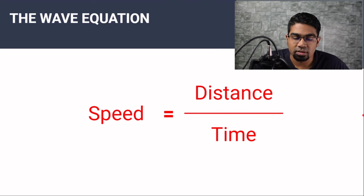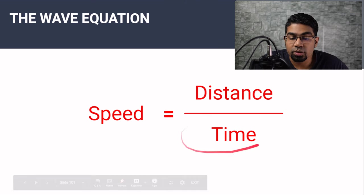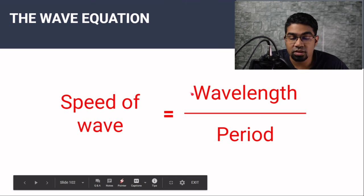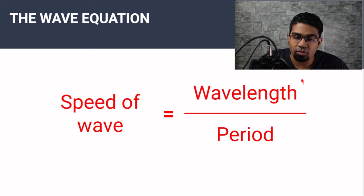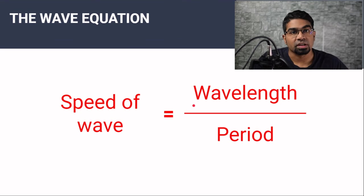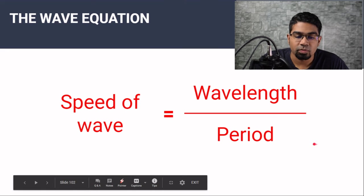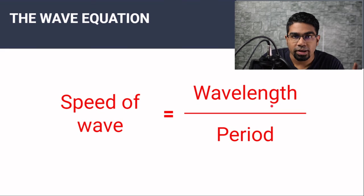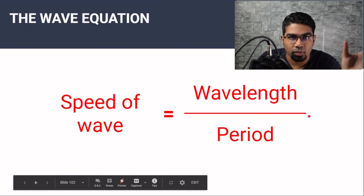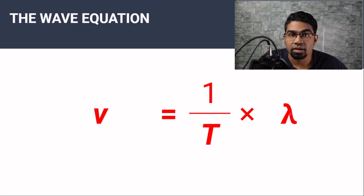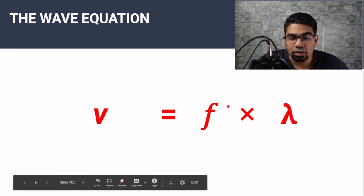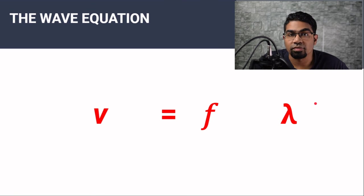The wave equation begins with the equation for speed. Speed is the rate of change of distance, or distance per unit time. To get the speed of the wave, we measure the distance traveled by the wave over the time taken. We choose the length of one wave — the wavelength — as the distance traveled, and the time taken for one complete oscillation is the period. So the speed of the wave equals the wavelength divided by the period: V = λ/T. This can be written as (1/T) × λ. Since 1/T equals frequency, this gives us the wave equation: V = fλ. The speed of a wave equals the frequency of the wave multiplied by its wavelength.